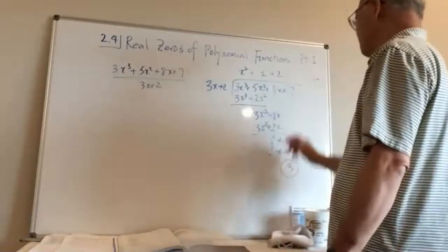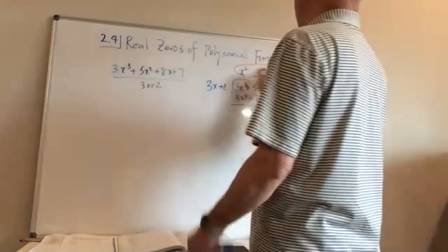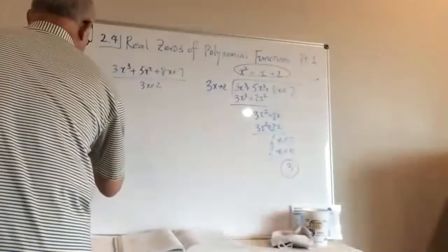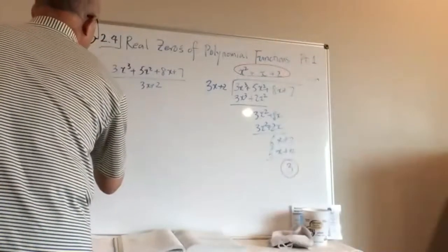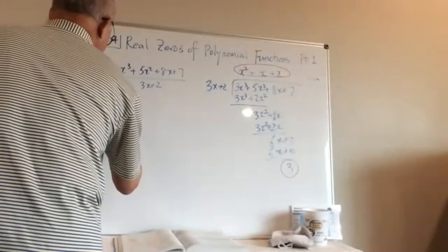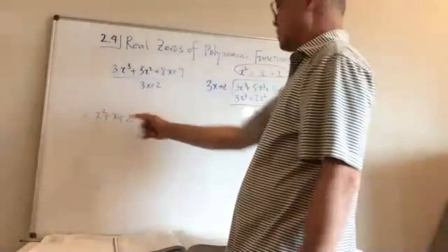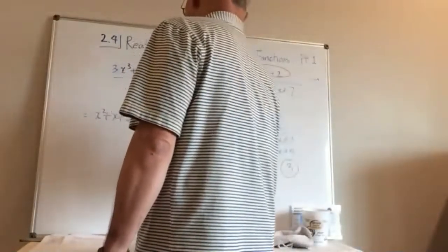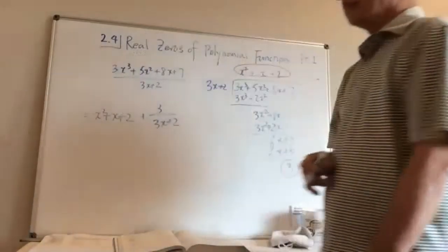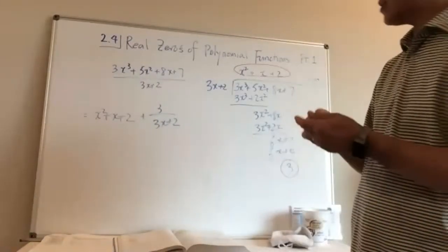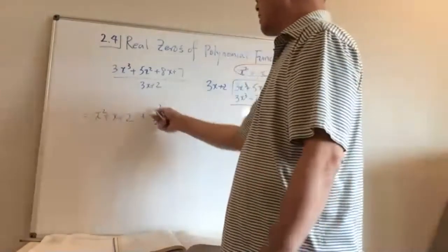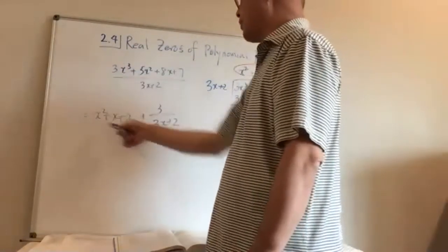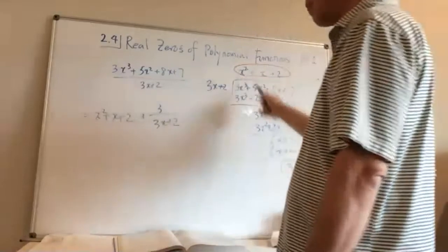So the remainder is 3 and the quotient is x² + x + 2. The original division equals the quotient x² + x + 2 plus the remainder 3, and we found this by doing long division.